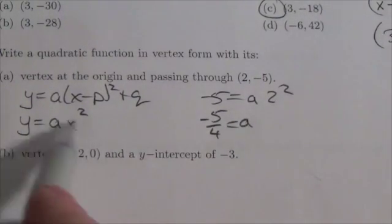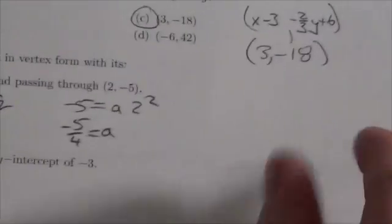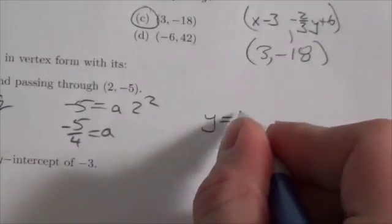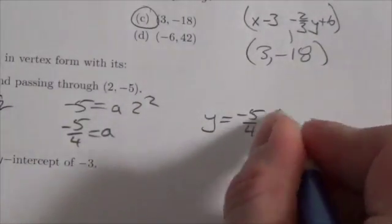You need to put that together in this form to get the final answer, so my answer is y = (-5/4)x². That's what I'm looking for.